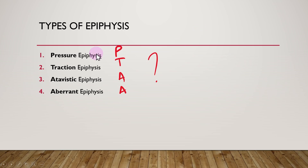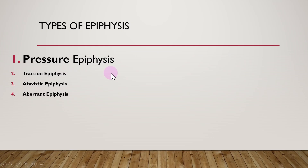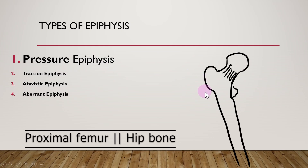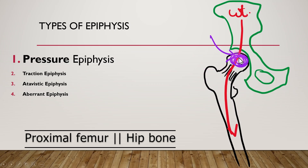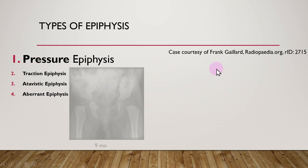Let us go to what is a pressure epiphyses. This illustration shows the proximal end of the femur bone articulating with the hip bone. You can notice that the weight transmission line goes through this pathway through the hip bone and the femur. Within the head of the femur, there is a formation of an epiphyses, and since it is in the location of the weight transmission line, it is known as a pressure epiphyses.